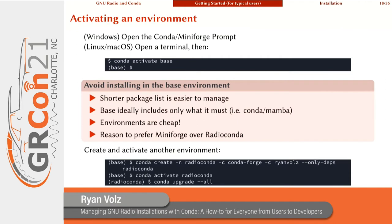This could be a reason to prefer Miniforge over Radio Conda, because Miniforge is that small base distribution whereas Radio Conda has everything installed in the base environment. So if you opt for Miniforge, you can create and activate another environment with all of the Radio Conda packages by doing a `conda create` command, naming that environment Radio Conda, telling it to install from the conda-forge channel and your personal channel, and installing the dependencies of the Radio Conda meta package. Then you can activate that environment, and as new packages come out, upgrade them with `conda upgrade --all`.